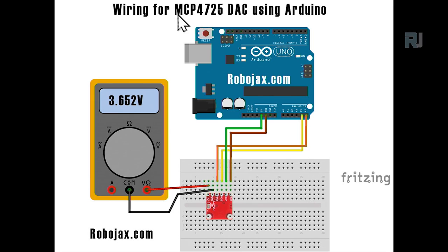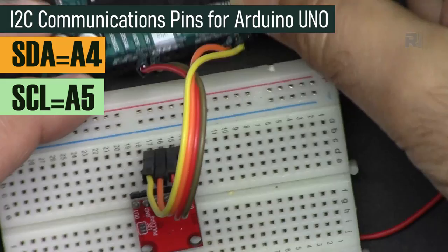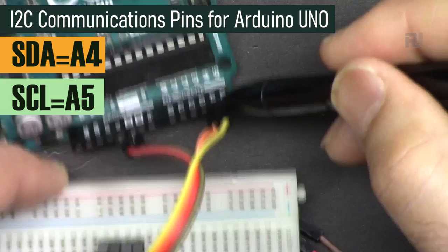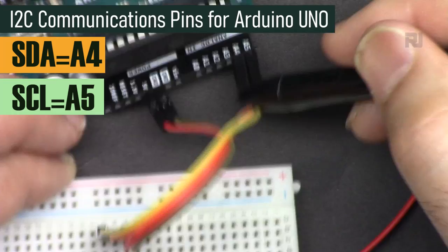Here is the wiring diagram for the MCP4725 DAC. Ground is connected to ground, VCC is connected to 5 volts — you can also connect to 3.3 volts or an external source, but make sure to connect the ground as well. SDA is connected to A4 and SCL is connected to A5. The two output pins are ground and VOUT. I've zoomed in so you can see A5 connected to SCL and A4 connected to SDA using the orange wire.